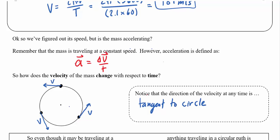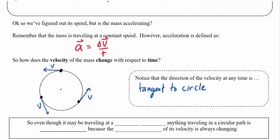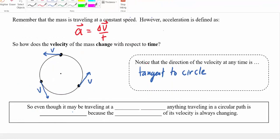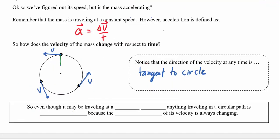If you were twirling a mass on a string and let go at any instant, the mass would fly off in a straight line in that tangential direction, consistent with Newton's first law. As the object goes around the circle, it is in fact accelerating, and perhaps surprisingly, the direction of that acceleration points inward — toward the center, along the radius.